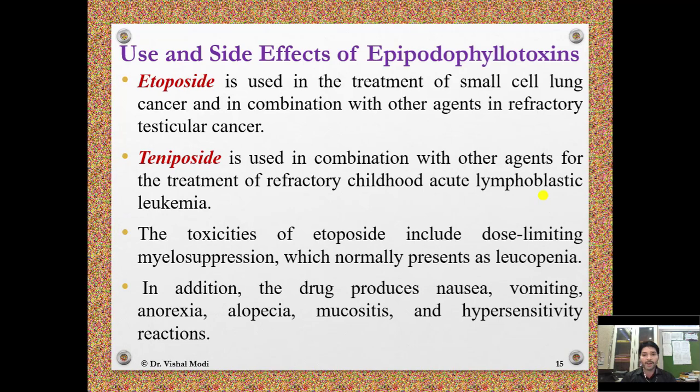Use and side effects: Etoposide is used in the treatment of small cell lung cancer and in combination with other agents in refractory testicular cancer. Teniposide is used in combination with other agents for the treatment of refractory childhood acute lymphoblastic leukemia. Toxicity of etoposide includes dose-limiting myelosuppression, normally presenting as leukopenia, as well as nausea, vomiting, anorexia, alopecia, mucositis, and hypersensitivity reactions.